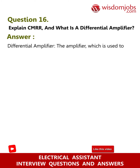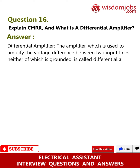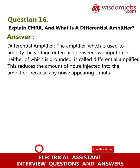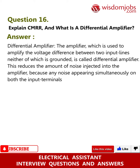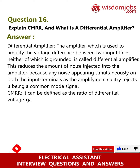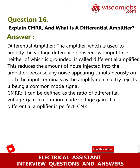Question 16: Explain CMRR and what is a differential amplifier? Answer — Differential amplifier: The amplifier which is used to amplify the voltage difference between two input lines, neither of which is grounded, is called a differential amplifier. This reduces the amount of noise injected into the amplifier because any noise appearing simultaneously on both input terminals is rejected as a common mode signal. CMRR is defined as the ratio of differential voltage gain to common mode voltage gain. If a differential amplifier is perfect, CMRR would be infinite because the common mode voltage gain would be zero.